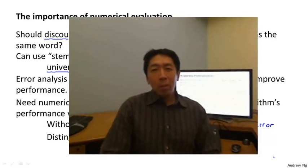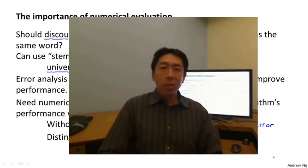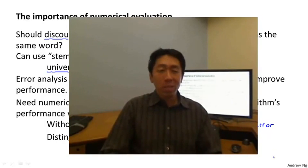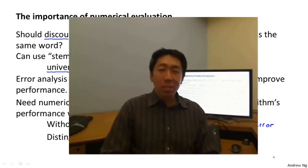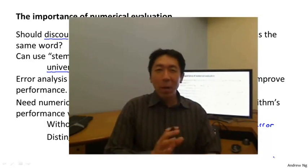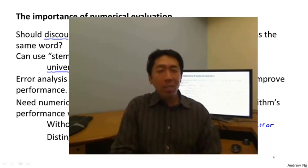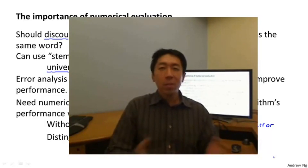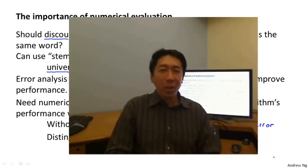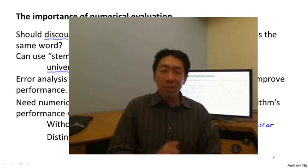To wrap up: when starting on a new machine learning problem, what I almost always recommend is to implement a quick and dirty implementation of your learning algorithm. I've almost never seen anyone spend too little time on this quick and dirty implementation — I've pretty much only seen people spend much too much time building their first supposedly quick and dirty implementation. So really don't worry about it being too quick or too dirty; implement something as quickly as you can.